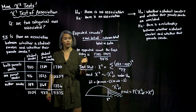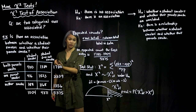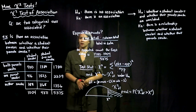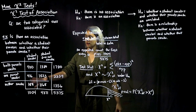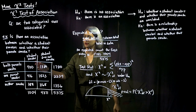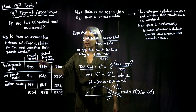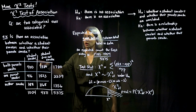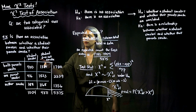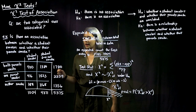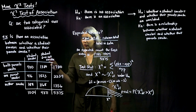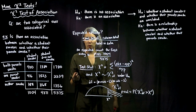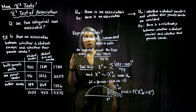For example, maybe our two categorical variables are whether a student smokes and whether their parents smoke. Our data could look like this — here's our contingency table. The student could either smoke or not smoke, so we have two columns, and we have three options for the parents.